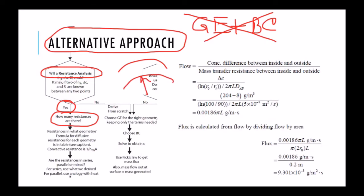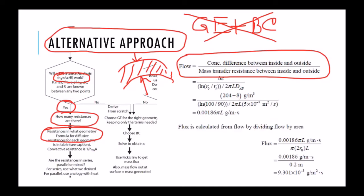How many resistances are there? Well there is only one resistance, so it's the radial transport. It's just the resistance of the outside layer of the stem. And then we need to think of resistances in what geometry. In resistance formulation, flow is concentration difference between inside and outside divided by the mass transfer resistance.